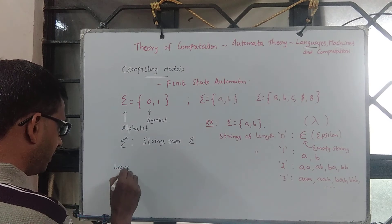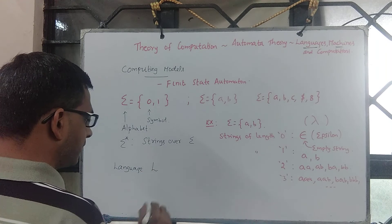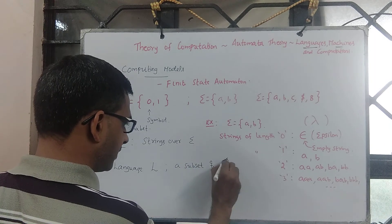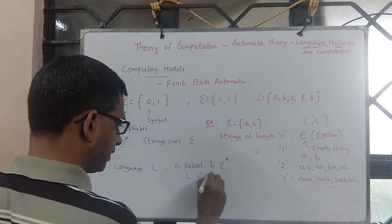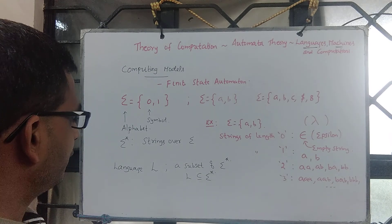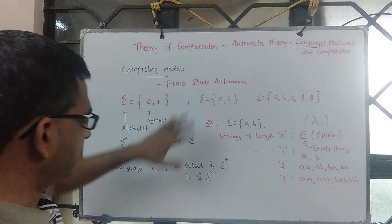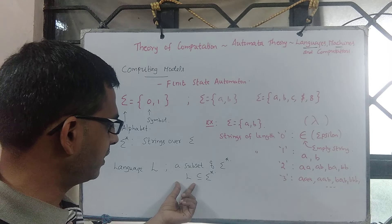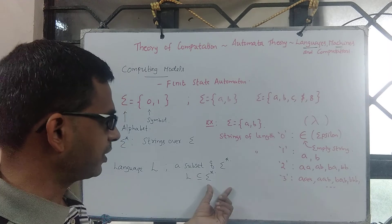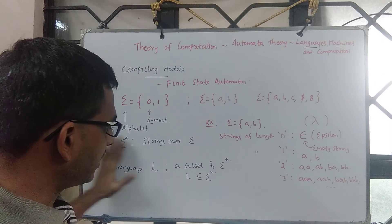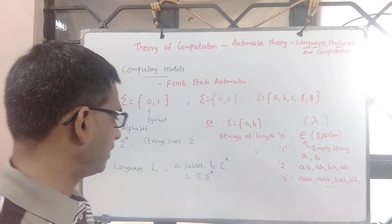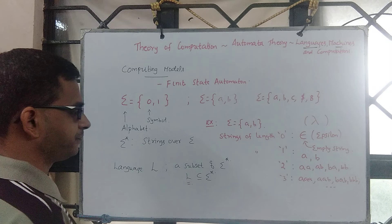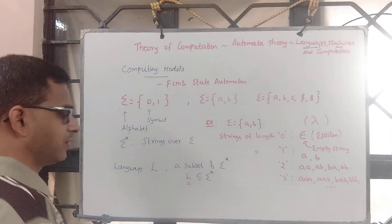Then we define something called a language, denoted using the symbol L. Language L is precisely a subset of sigma star. So when you say you have designed a finite state automaton accepting language L, that means it is accepting strings that are present in L, which is a subset of sigma star. It may not accept everything in sigma star — it may accept only a subset of it. That subset we call a language. So a language is some subset of sigma star.